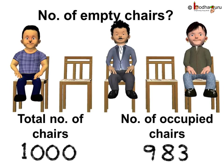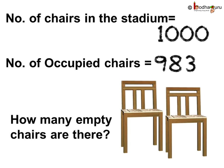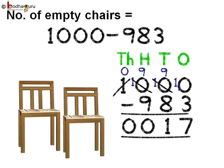Let us take another example. There are 1000 chairs in a stadium. During an interesting match, 983 chairs were occupied. So how many chairs were not occupied — that is, they were vacant? Again, let us see what we need to find. We know the number of chairs in the stadium is equal to 1000, and the number of chairs which were occupied is equal to 983. Now we need to find the total number of chairs which are empty.